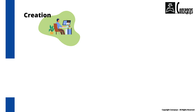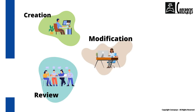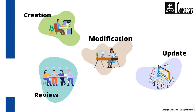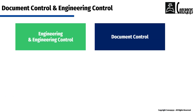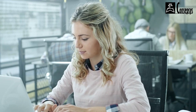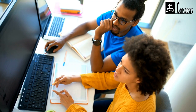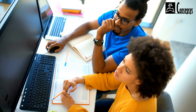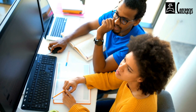When it comes to creating documents, reviewing, modifying or updating documents, the engineering and the document controller have complementary roles. Engineering produces documents and drawings according to the scope and constraints of the project, modifies and updates documents and drawings when necessary, and checks documentation as per technical and quality criteria.